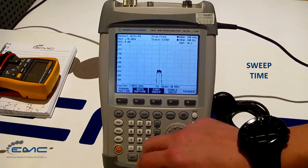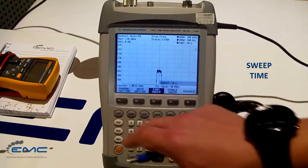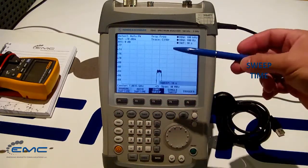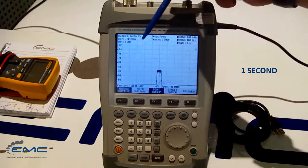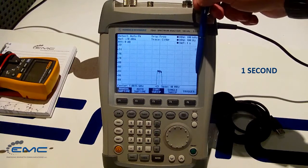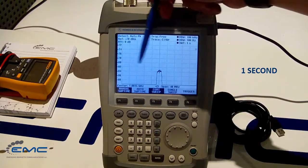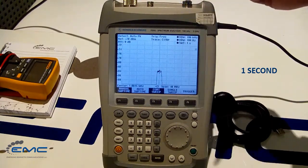Anyway, let's take it under manual control and increase our sweep time from 10 seconds to 1 second. Now we cover our span range in 1 second instead of 10 seconds, which we had in auto mode.